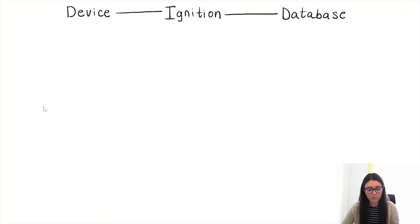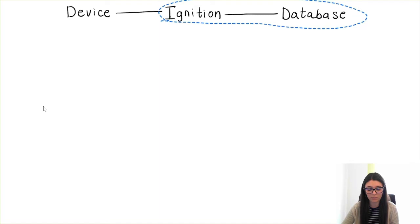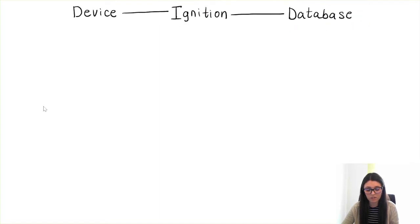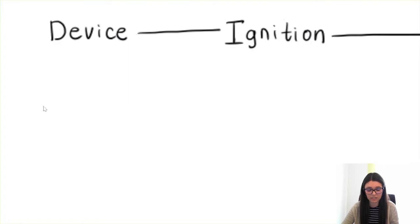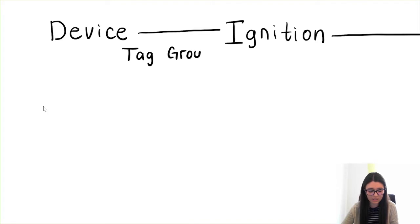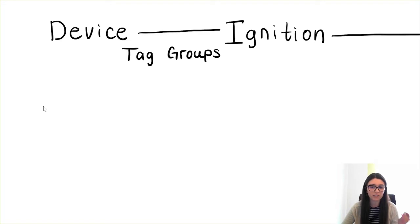Before I move to the historical part, which will be the main topic today, I will mention something that happens before we are able to see the tag values in Ignition. For that, we use tag groups. Tag groups determine the execution rate of each and every tag — meaning how often the tags pull values from the PLC, or how often these tags are being updated.